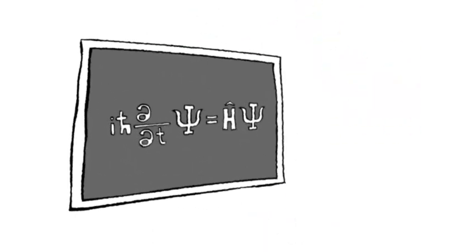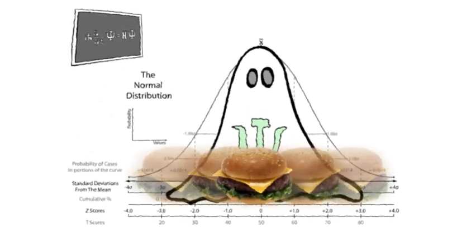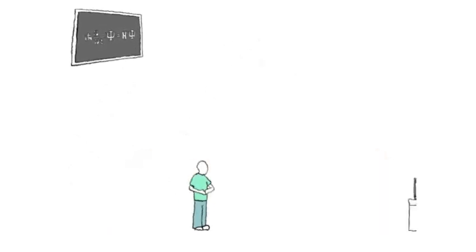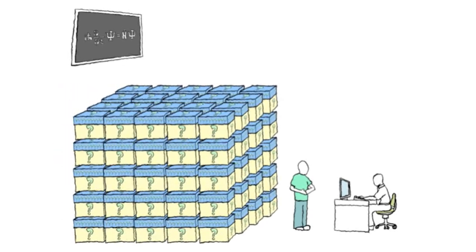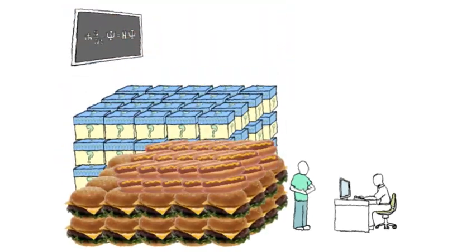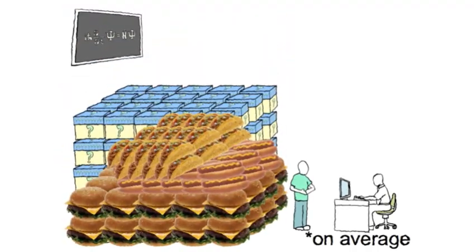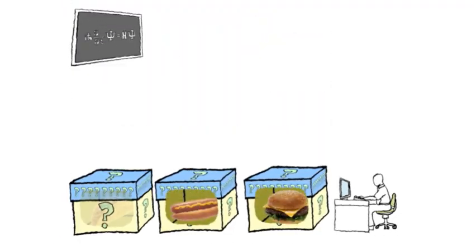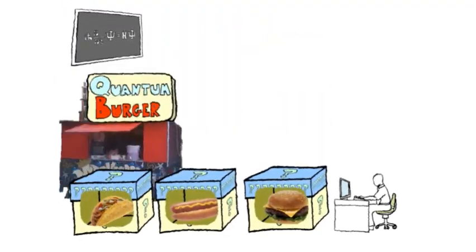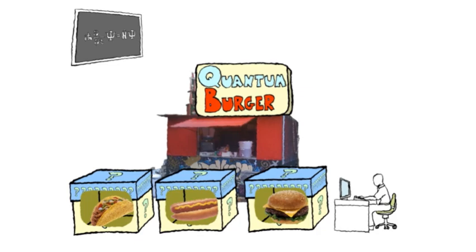Those in the math camp say that the wave function is just a way to predict what will happen if you run an experiment a bunch of times. So if your buddy brought you 100 mystery meals, 40 of them would be burgers, 30 of them hot dogs, and 30 would be tacos. Each individual meal's content is actually fixed, it's just that you don't know what the fine folks at Quantum Burger happened to put in the box that day.